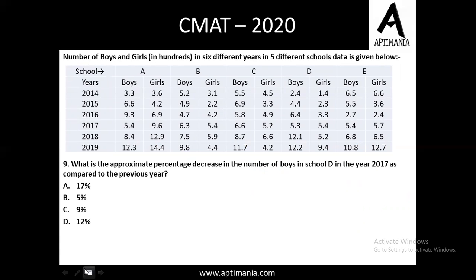This is the question from the Data Interpretation part. There will be a set of four questions. The data gives the number of boys and girls in hundreds across six different years in five different schools. For school A, the number of boys in 2014 is 3.3 in hundreds, meaning 330 boys. Let's go to the question: what is the approximate percentage decrease in the number of boys in school D in the year 2017?